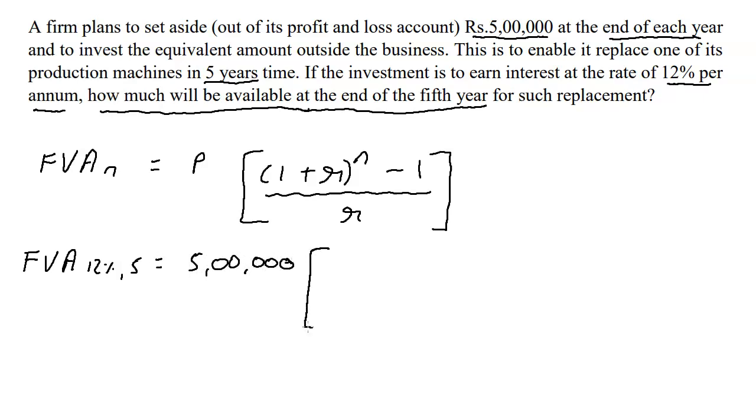Five lakhs open bracket, one plus, and since we are talking about twelve percent we must understand that twelve percent means twelve upon hundred which is 0.12. So it's going to be 1 plus 0.12.